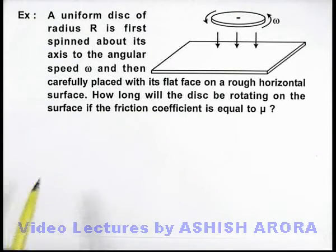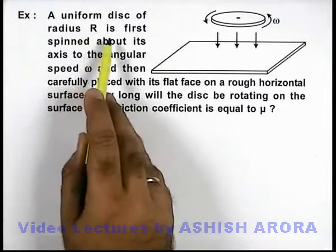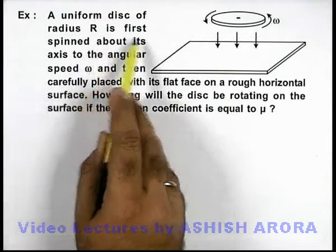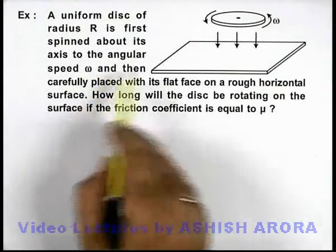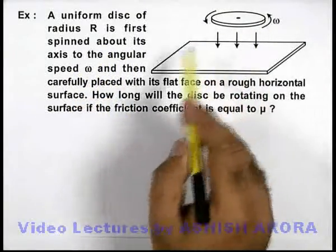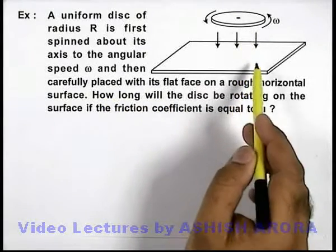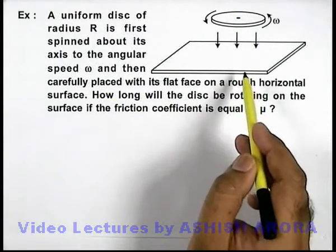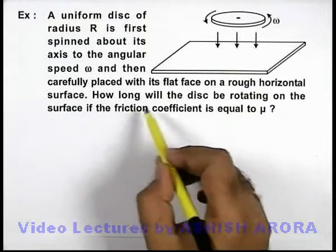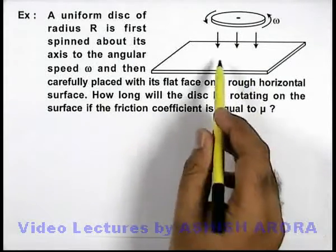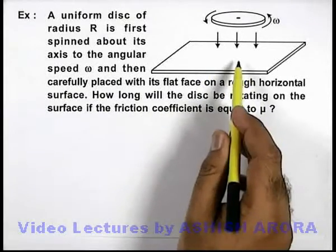In this example we are given that a uniform disc of radius R is first spun about its axis to the angular speed omega, and then it is carefully placed with a flat face on a rough horizontal surface. We are required to find how long will the disc be rotating on the surface if the friction coefficient is μ.